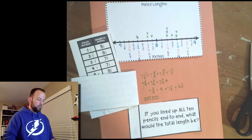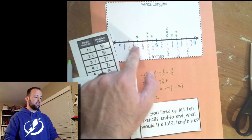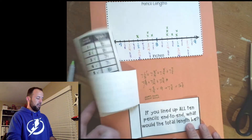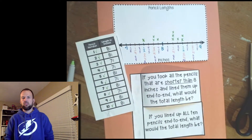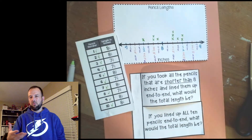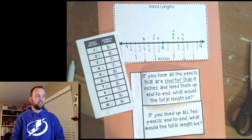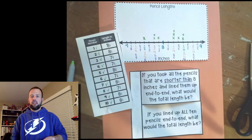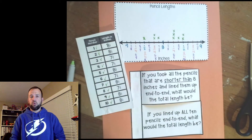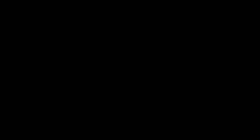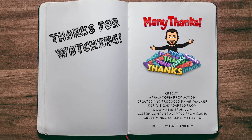The second question asks: if you lined up all ten pencils end to end, what would the total length be? That's a lot to add up. I did one example for you — if you want to try that second one and send me an email or text with your answer, I'll give you some bonus points and maybe enter you in a prize drawing. As long as you've got the line plot down and can make comparisons from your data, that's what we're looking for. Please reach out if you have any questions, and thanks for watching — we'll see you next time.